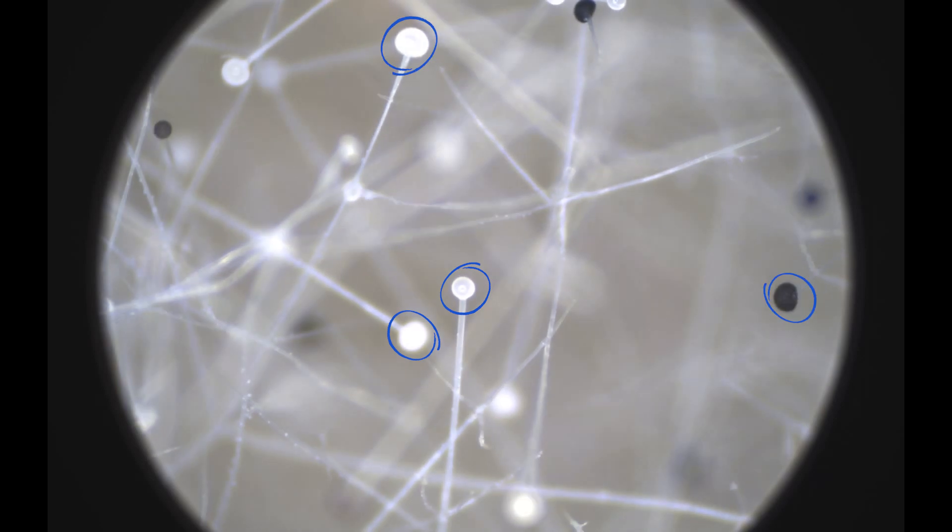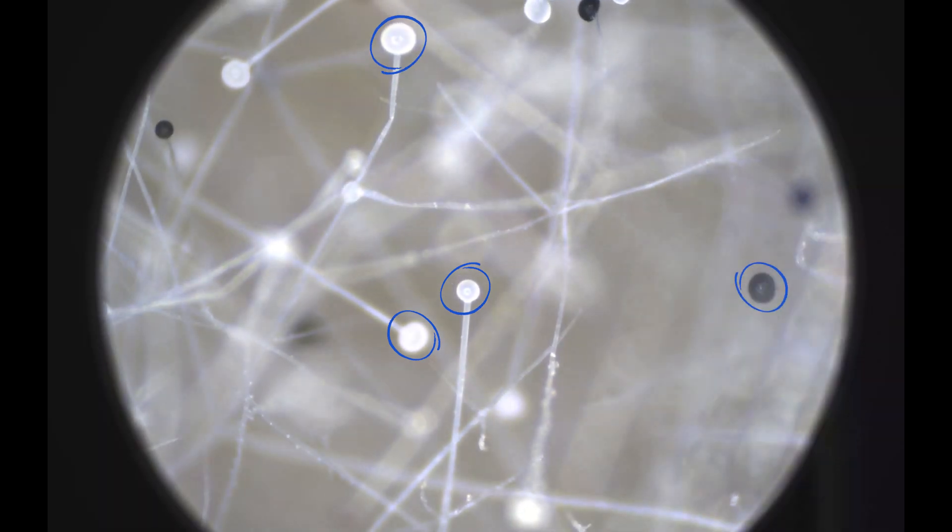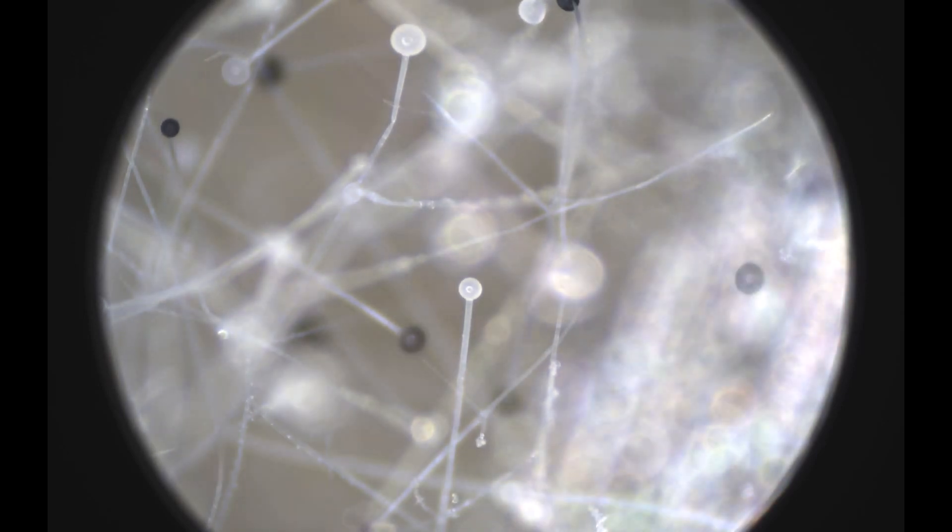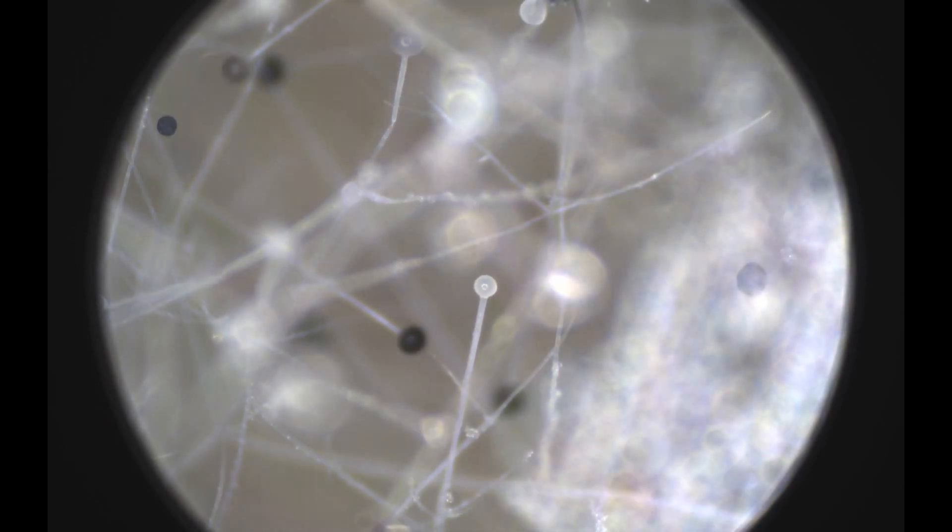Second, these ball-shaped structures at the end of these stalks are called sporangia, and that is where the spores are produced. Sporangia are simply defined as a cell that contains the spores of a fungus.